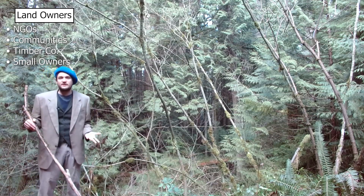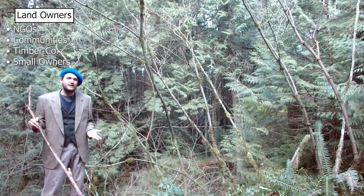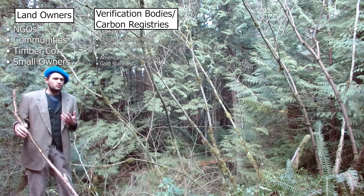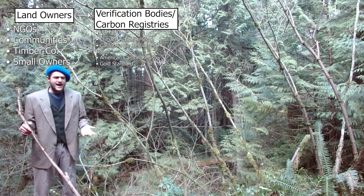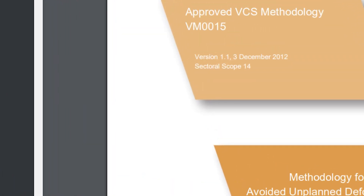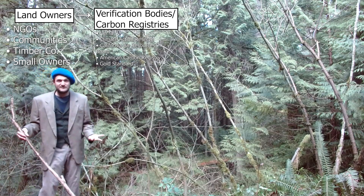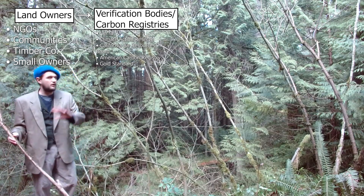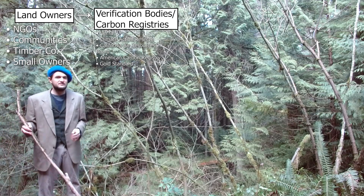All forest carbon credits are created by what are known as verification bodies. What these guys do is they create a series of protocols — a series of rules — that you have to follow in order to enroll your land for carbon offsets. There are about five big verification bodies out there. Verra is the biggest, and they're responsible for all the avoided deforestation projects out there.